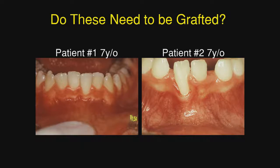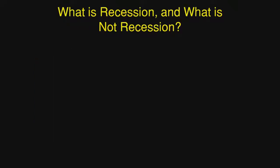These are two cases: the one on the left does not need a graft. The one on the right — go ahead and start the orthodontic movement. If recession occurs, then you could graft at that point.